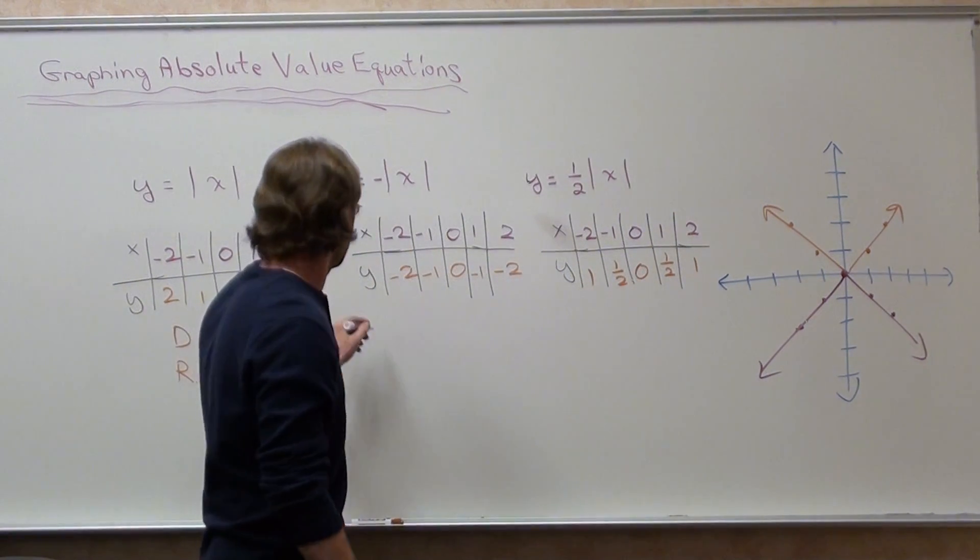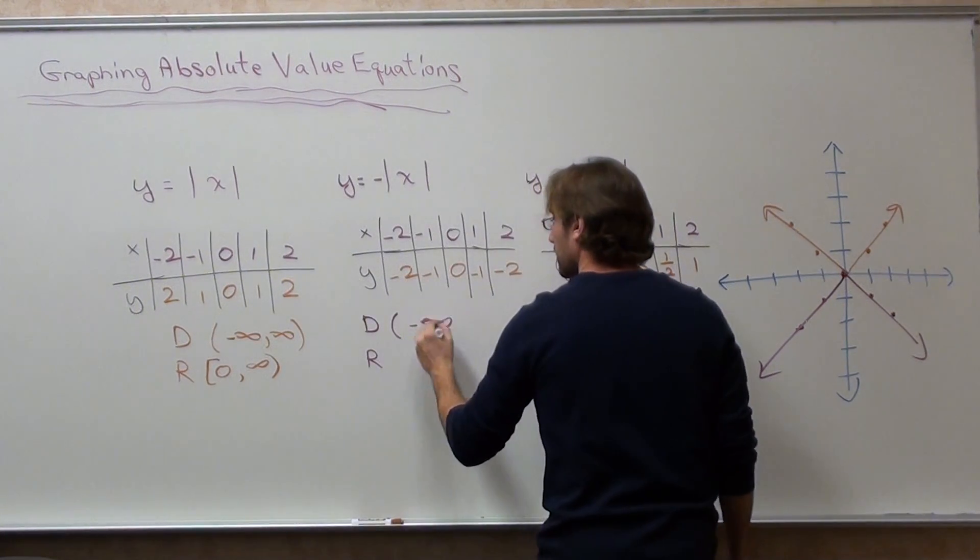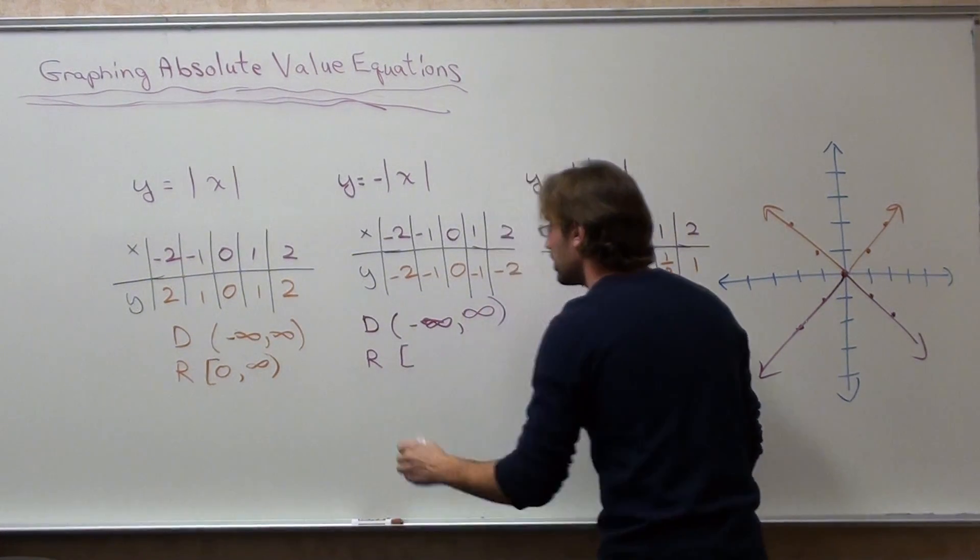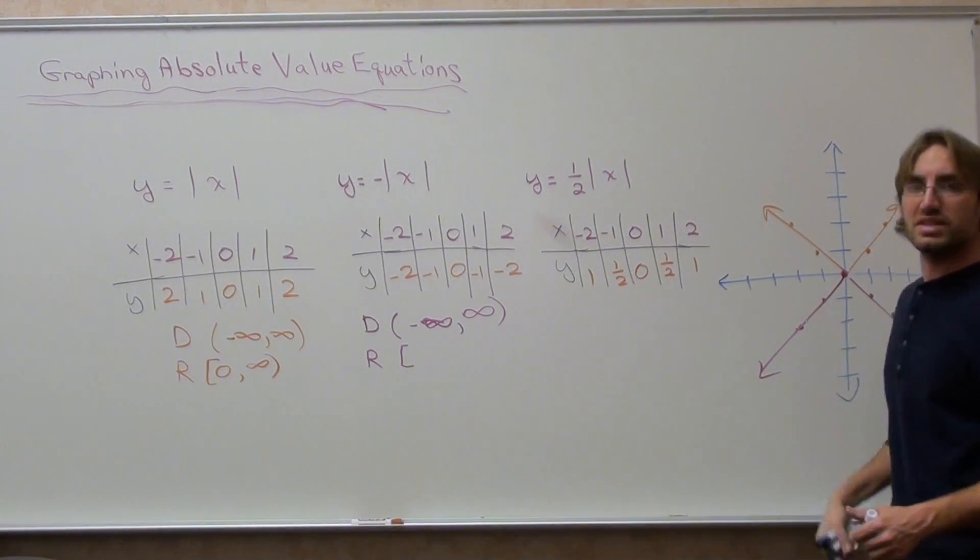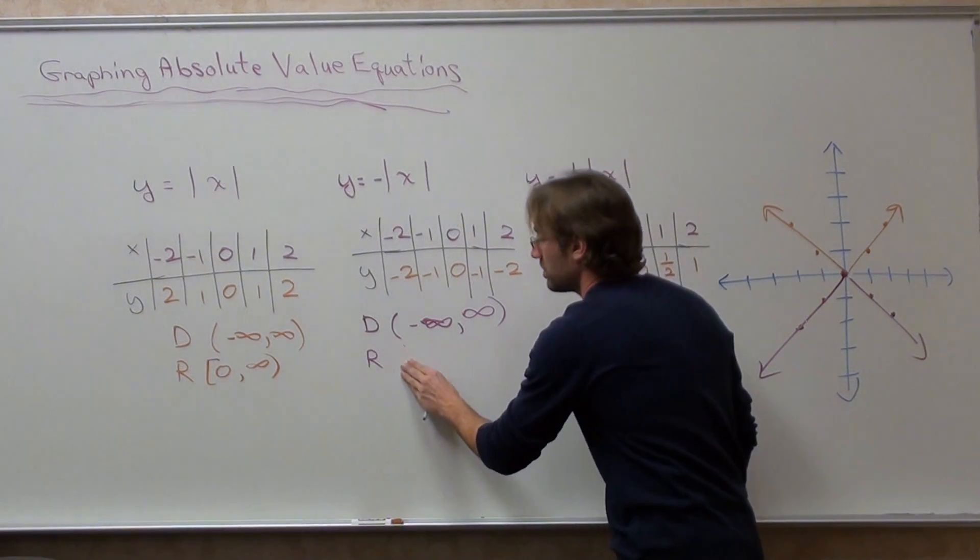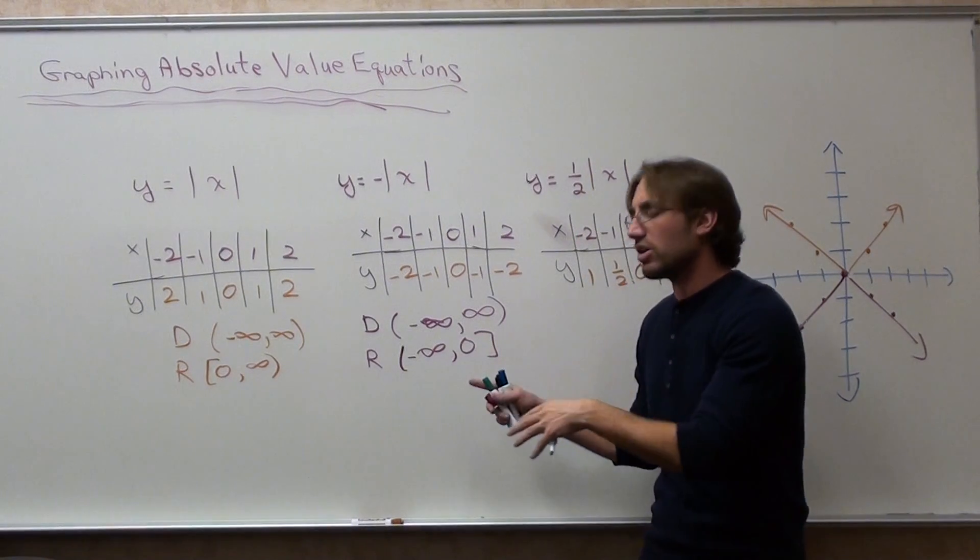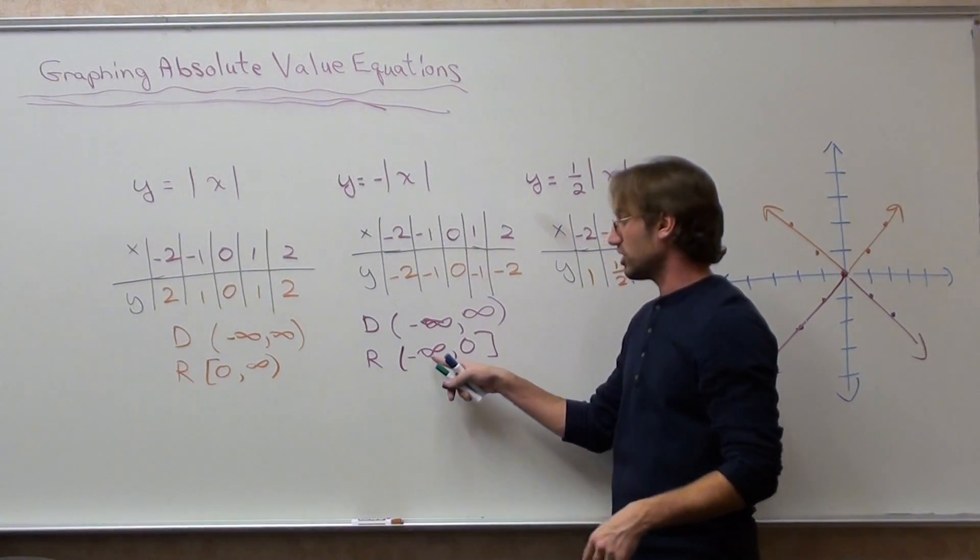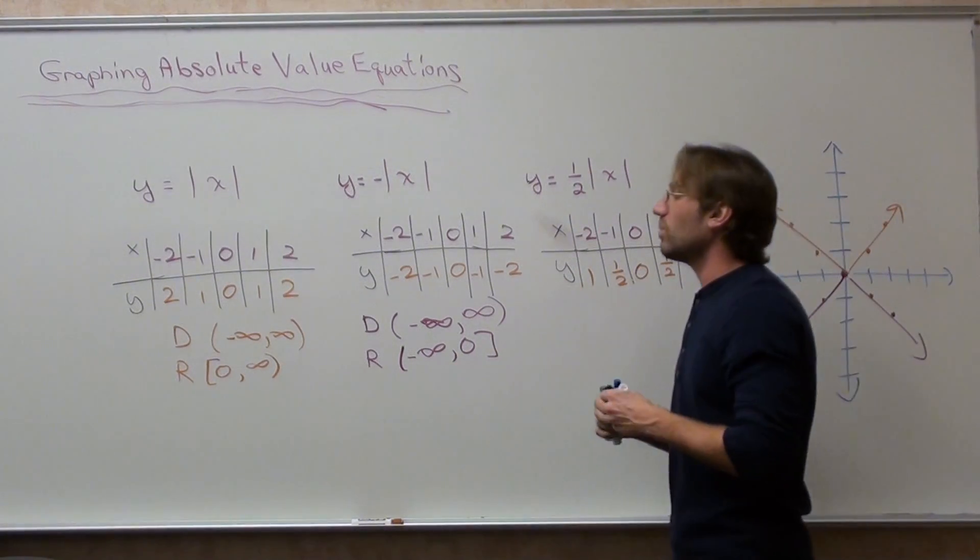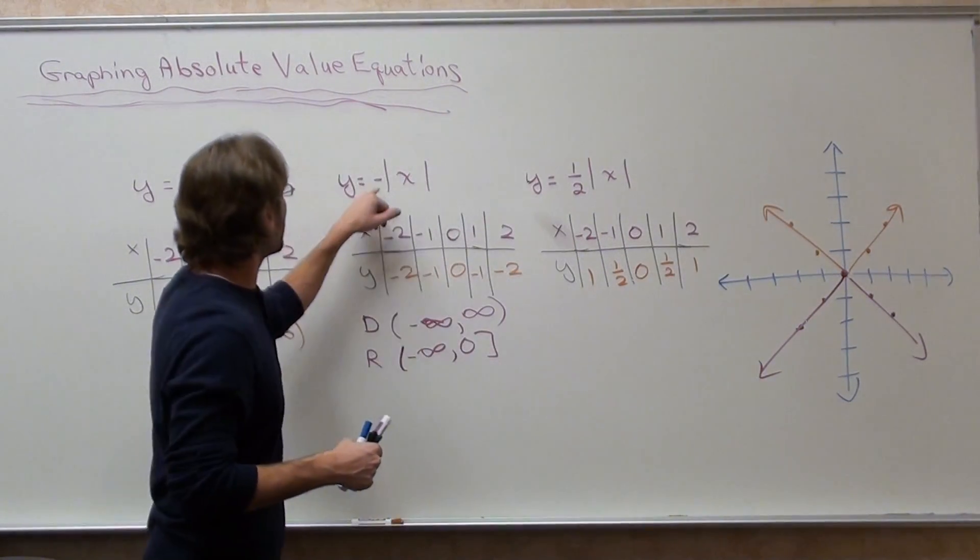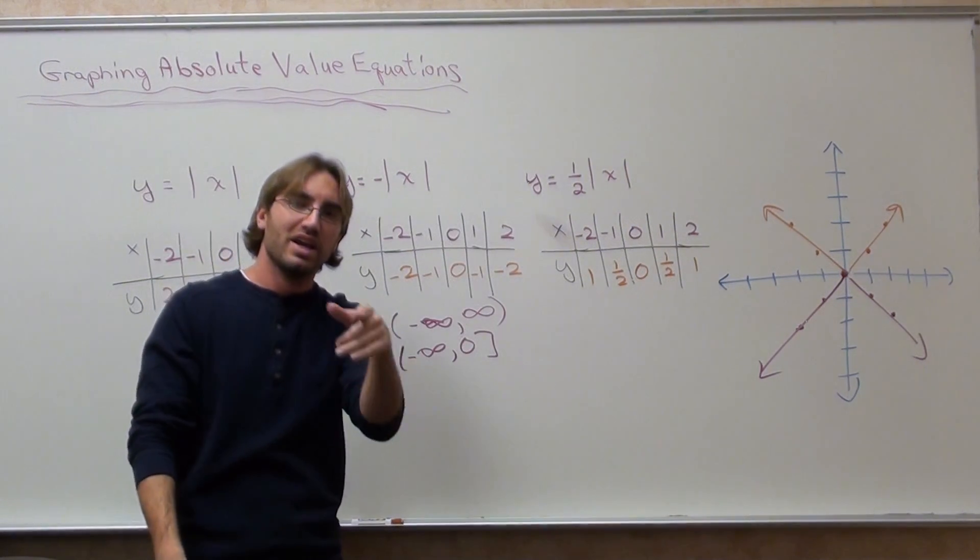So the domain is still the same, but the range, its lowest value is negative infinity, and its highest value is zero. Because range and domain are always listed from lowest to highest. Now the reason why it's a mirror image is because of that negative. A negative in front of an absolute value will flip it. It won't be an upwards v, but it will be a downwards v.